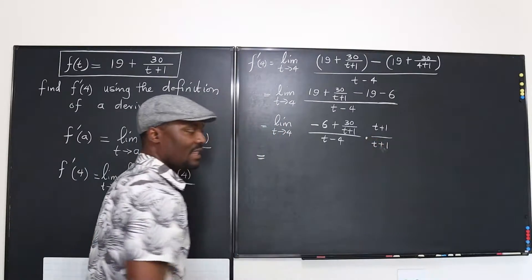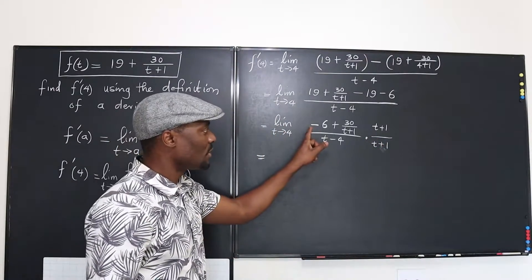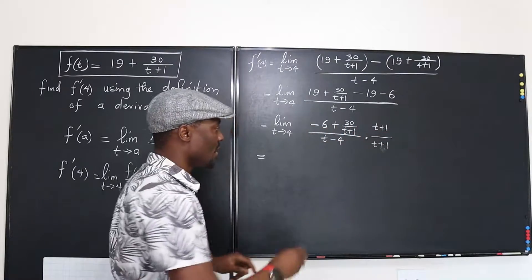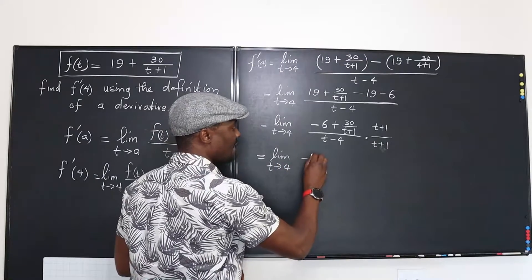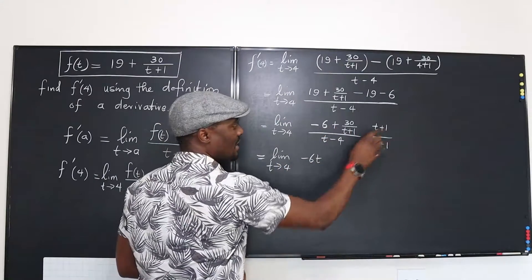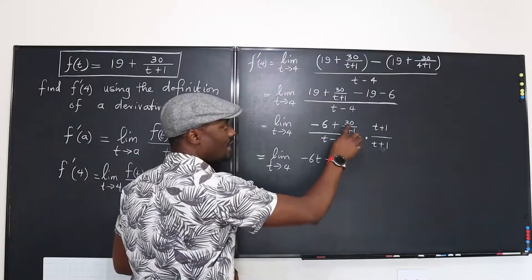You're multiplying by 1. So let's multiply negative 6 by this. You're going to end up with the limit as t approaches 4 of negative 6t. Negative 6 times 1 is negative 6 and 30.